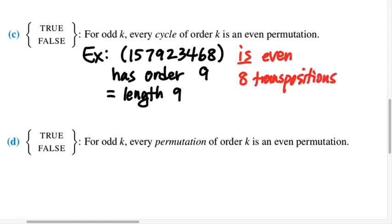And so what's the general case? Is it true that every cycle of odd order is an even permutation? It is true. So for a single cycle, this is definitely a true statement. If the order is odd, the permutation is even in sign.